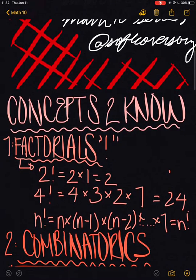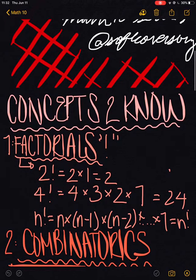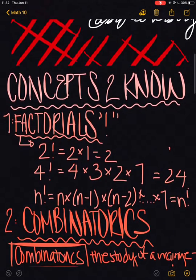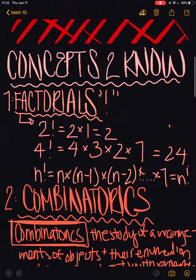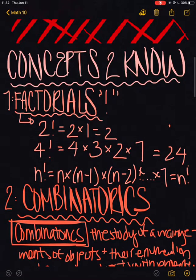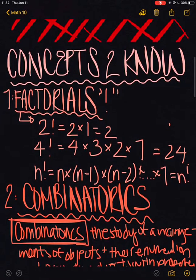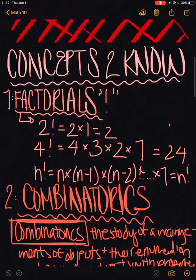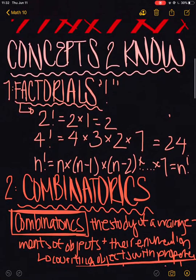But yeah, anyways, next we're gonna go over some combinatorics. Not combinatronics, that's what I called it before, and yikes. But yeah, this is the first of the three big concepts that she'll cover in class. Kind of like combinations, permutations, discrete math, etc. So it's basically the study of the arrangements of objects. Sorry if you can't read my writing. I can barely read my writing either. So it's the study of arrangements of objects and their enumeration.